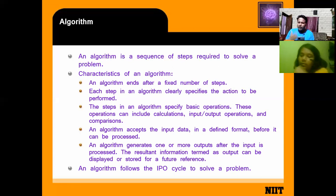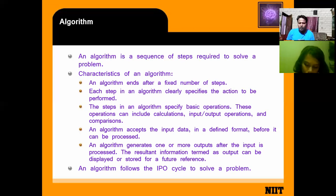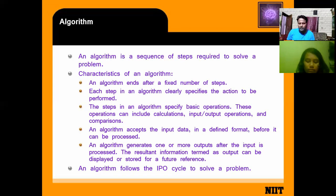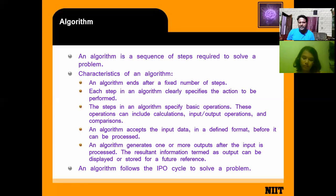For taking tea we use a cup, for drinking water we use a glass. Similarly, when storing information in an algorithm, you store it in a defined format. An algorithm generates one or more outputs after the input is processed. The resulting output is stored for future purpose. An algorithm follows the IPO cycle — Input, Process, Output — to solve a problem.